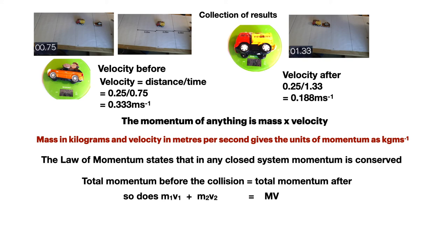Using these values in the equation at the bottom, we've therefore got a mass of 0.20 times 0.333 plus 0 because the second truck was stationary before the collision. And that will be equal to, or should be equal to, the total mass of the two trucks stuck together.